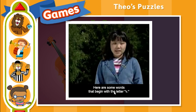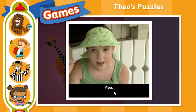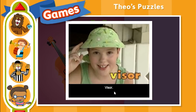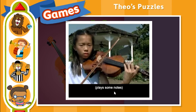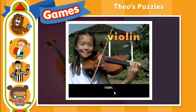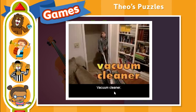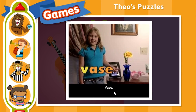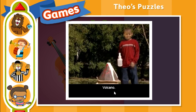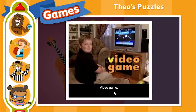Here's some words that begin with the letter V: Venetian blind, violin, vest, vacuum cleaner, vending machine, vase, volcano, video game.